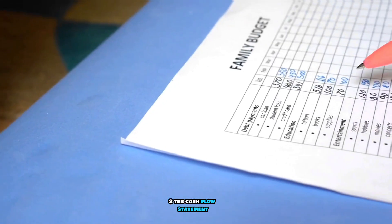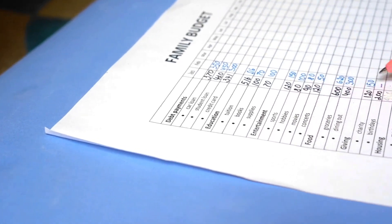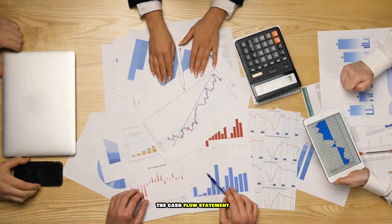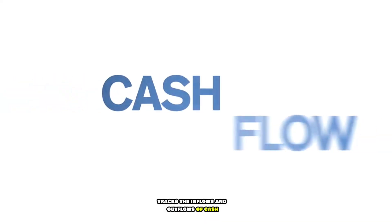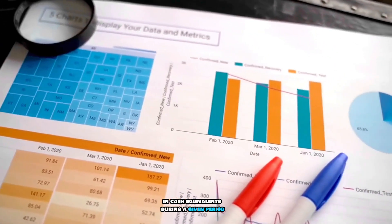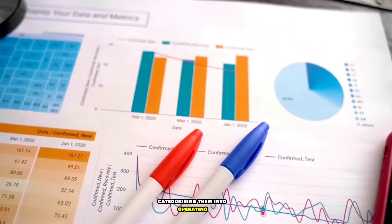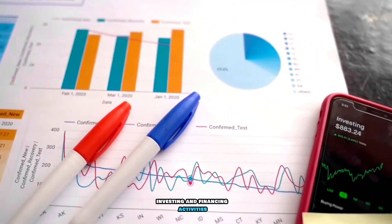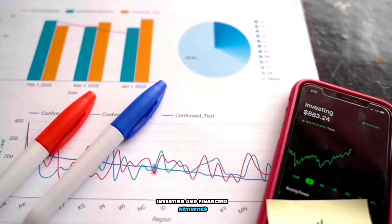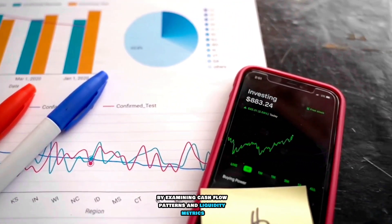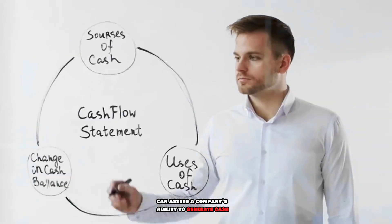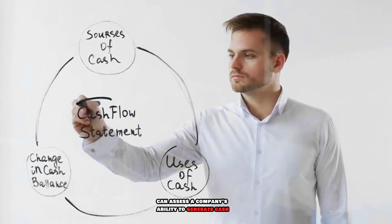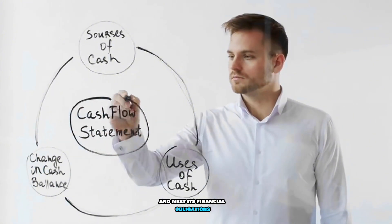3. The Cash Flow Statement: The cash flow statement tracks the inflows and outflows of cash and cash equivalents during a given period, categorizing them into operating, investing, and financing activities. By examining cash flow patterns and liquidity metrics, investors can assess a company's ability to generate cash and meet its financial obligations.